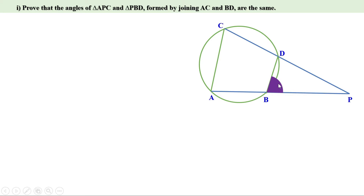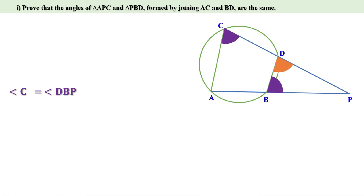So this angle is equal to angle at C, or we can say angle C equal to angle DBP. In the same way, this is another outer angle. It is equal to the inner angle at the opposite vertex, which is the opposite vertex of DA. And this is the inner angle at A. Therefore, angle A equal to angle BDP.